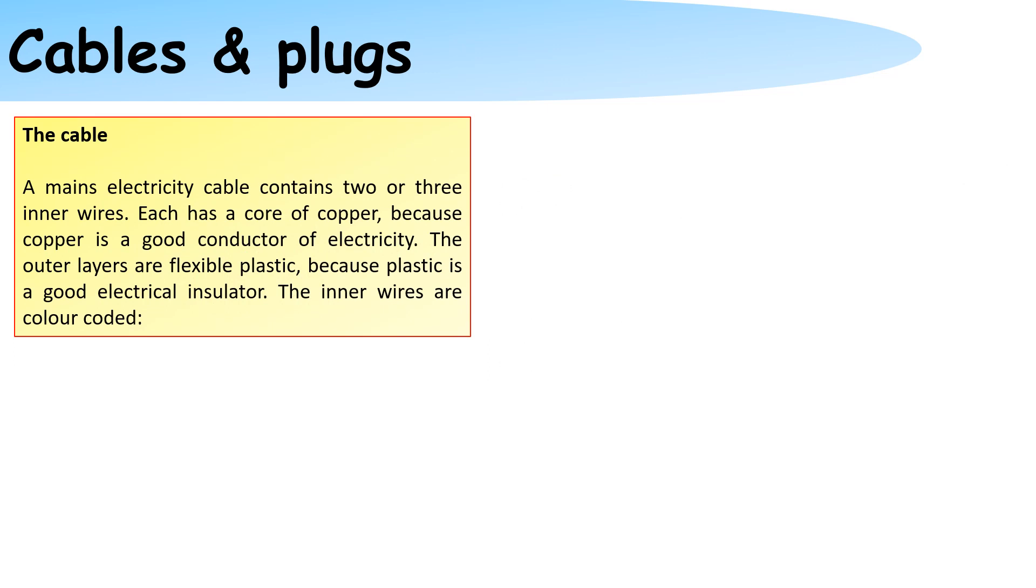The main electricity cable contains two or three inner wires. Each has a core of copper because copper is a good conductor of electricity. The outer layers are flexible plastic because plastics are good insulators. The inner wires are colour coded.